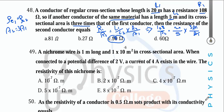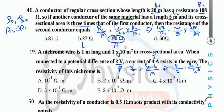A chromium wire 1 m long and 1×10⁻⁶ m² cross-section area is connected to a potential difference of 2 V. We want the resistivity. R = V/I, and also R = ρ·L/A. Using substitution: V/I = ρ·L/A with L = 1 and A = 10⁻⁶. Shift Solve gives ρ = 5×10⁻⁷ Ω·m.